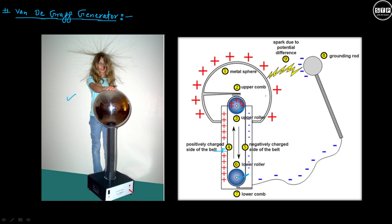There is a bigger metallic outer sphere. If you look at the potential of the inner sphere and the potential of the outer sphere, the potential of the outer sphere is lower than the potential of the inner sphere. That's why the positive charge accumulated on this roller will transfer to the outer sphere.